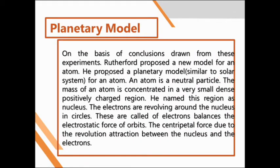Planetary Model. On the basis of conclusions drawn from this experiment, Rutherford proposed a new model of an atom — a planetary model similar to the solar system. An atom is a neutral particle. The mass of an atom is concentrated in a very small, dense, positively charged region, which he named the nucleus. The electrons are revolving around the nucleus in circles, called electron orbits. The electrostatic force of attraction between the nucleus and the electrons provides the centripetal force due to the revolution.